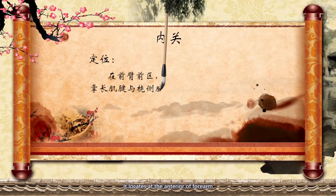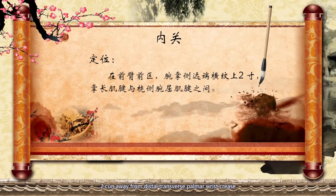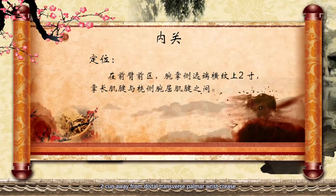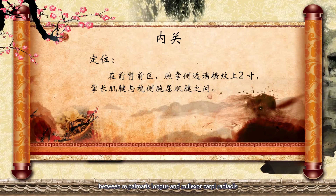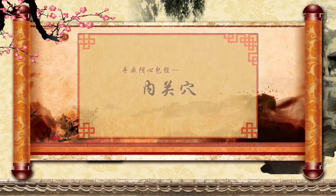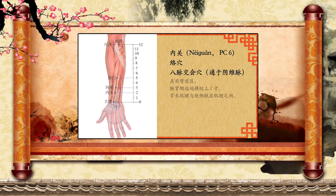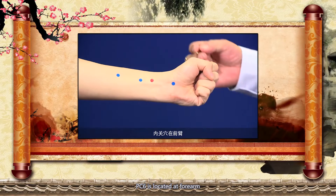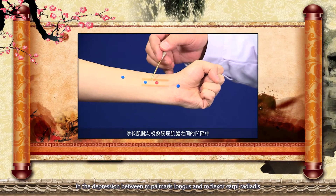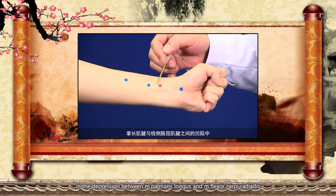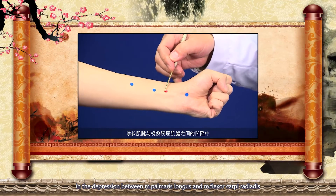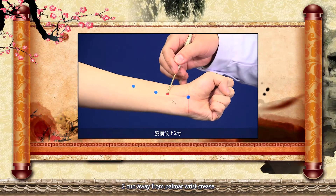PC6 is located on the anterior of the forearm, 2 cun away from the distal transverse palmar wrist crease, between the palmaris longus tendon and the flexor carpi radialis tendon. Now let's take a look at the video. PC6 is located at the forearm in the depression between these two tendons, 2 cun away from the palmar wrist crease.